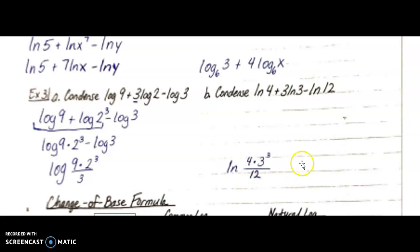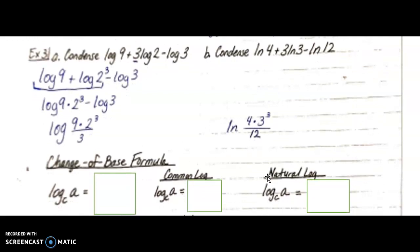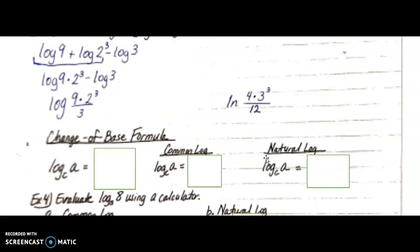You should have gotten ln of four times three to the third power over 12. And I know you're thinking, what if we can actually simplify that? But as of right now, I don't want you to simplify it.